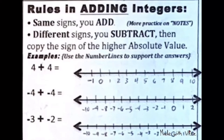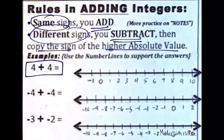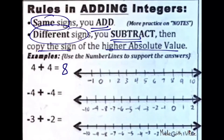Adding integers can also be represented using a number line. We will still follow the same rules in adding integers: same signs, you add; different signs, you subtract; then copy the sign of the higher absolute value. Let's look at the first example: 4 plus 4.